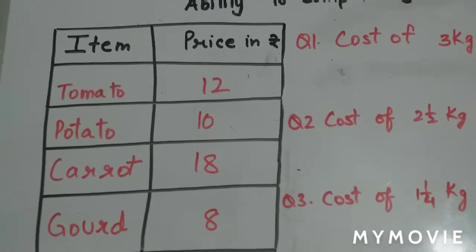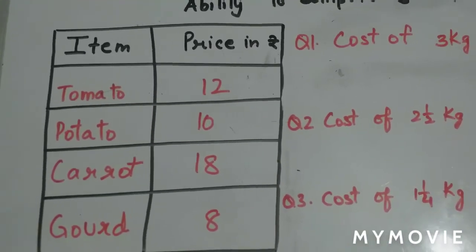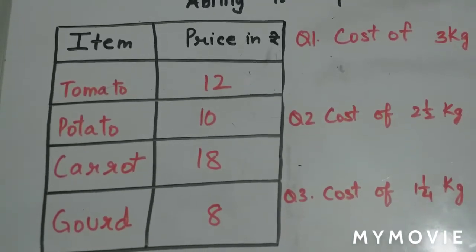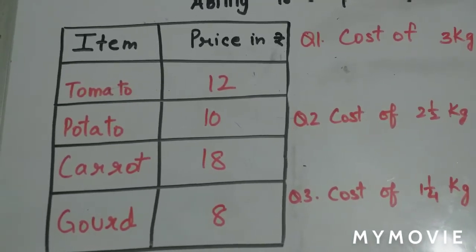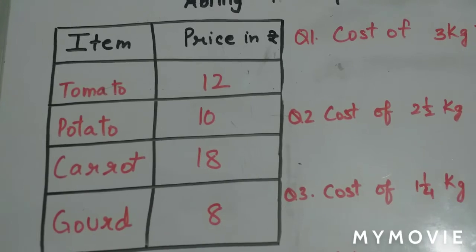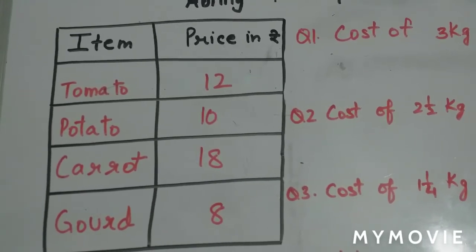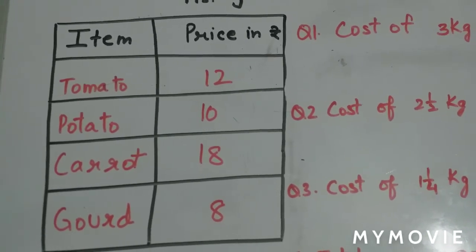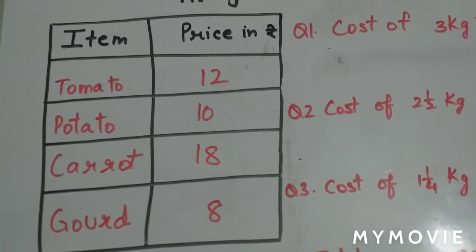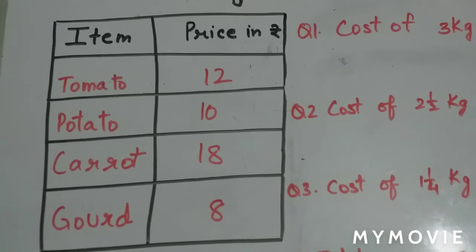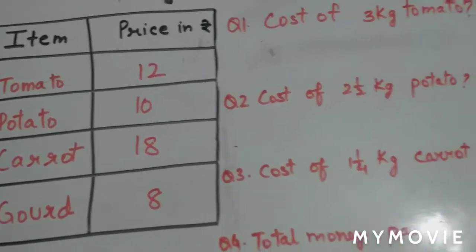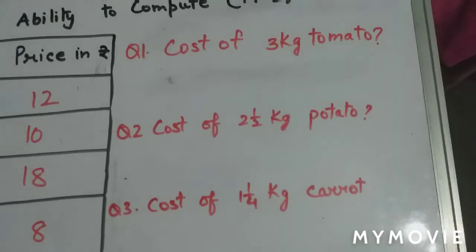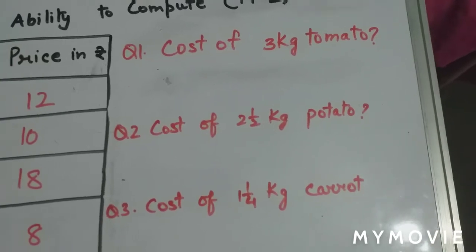Here is a table which shows items and prices. Tomato is 12 rupees per kg, potato is 10 rupees per kg, carrot is 18 rupees, and gourd is 8 rupees per kg. Now they are asking the cost of 3 kg tomato.